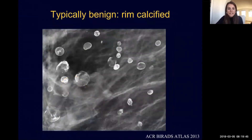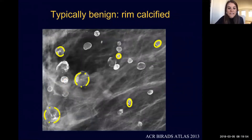Rim calcifications are characteristically benign. We see these thin peripheral calcifications that occur around the surface of a sphere — they may be continuous or discontinuous. What these represent are either areas of fat necrosis or calcified walls of oil cysts, both benign requiring no further imaging workup and no biopsy. Very frequently we'll see these in the setting of trauma to the breast, and women will often have multiple similar-appearing calcifications like these.